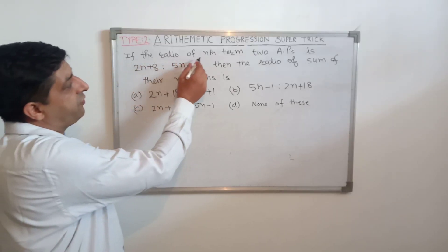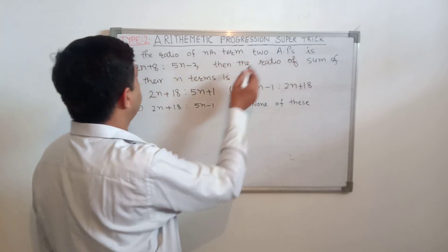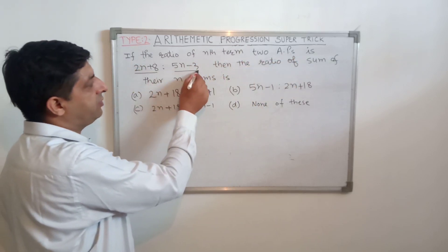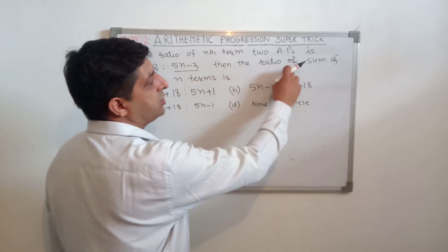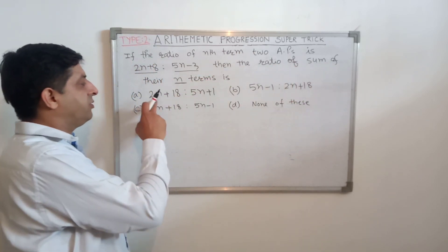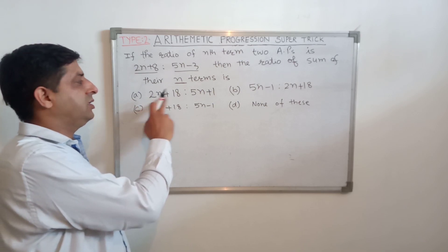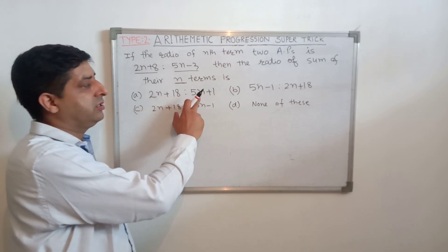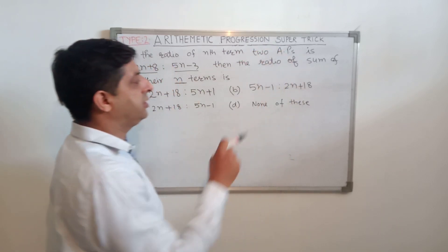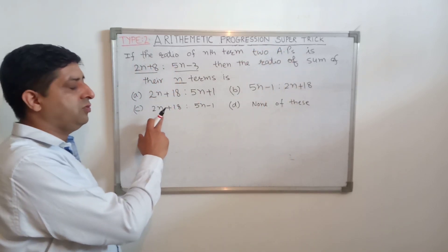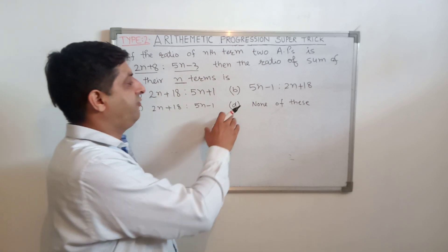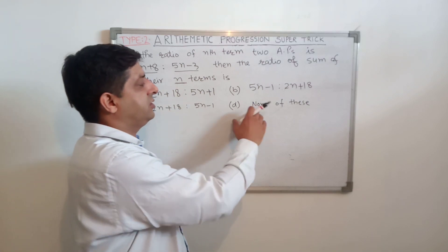Now the second sum of this type: if the ratio of the Nth term of 2 APs is (2N + 8) : (5N − 3), then the ratio of the sum of their N terms is — option A: (2N + 18):(5N + 1), option B: (5N − 1):(2N + 18), option C: (2N + 18):(5N − 1), option D: none of these.